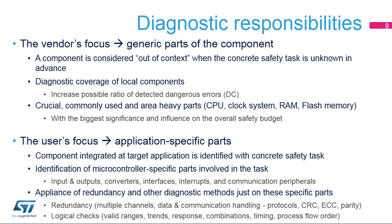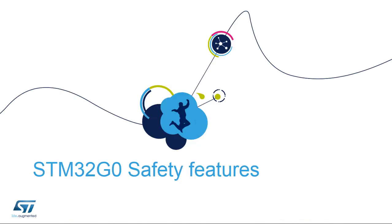Once a microcontroller is included in an application design and the safety task is specified, the safety support can be deployed much more efficiently and cover just the very specific parts of the microcontroller involved in the required safety case. Many efficient methods can then be applied based on detailed knowledge of the application requirements, its design, the process, and the equipment under control. Redundancy and knowledge of the system behavior are crucial principles. Inputs and outputs can be multiplied or checked by feedback, tested for logical state, value, or expected response in trends or time intervals. The processes can be monitored for correct timing and flow order.